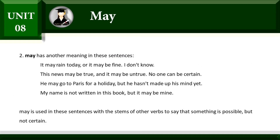May has another meaning in these sentences. It may rain today or it may be fine — I don't know. This news may be true and it may be untrue — no one can be certain. He may go to Paris for a holiday, but he hasn't made up his mind yet. My name is not written in this book, but it may be mine. May is used in these sentences with the stem of another verb to say that something is possible but not certain.